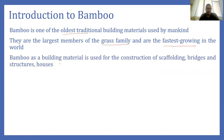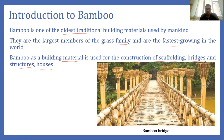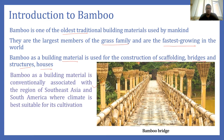Bamboo as a building material can be used in the construction of scaffolding, bridges, structures, and houses. Here you can see an example of a bamboo bridge in the northeastern region. Bamboo originally is associated with the region of Southeast Asia — tropical and subtropical regions — which is suitable for its growth, including northeastern regions, Thailand, Malaysia, and even South America.